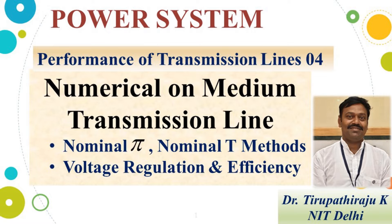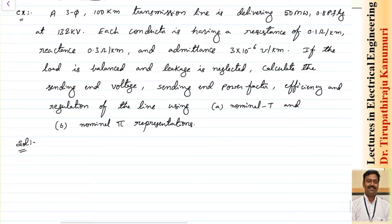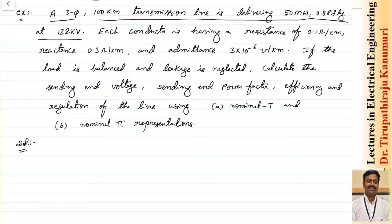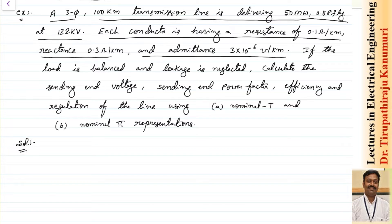Today we are going to discuss a numerical on medium transmission line. A three-phase 100-kilometer transmission line is delivering 50 megawatt at 0.8 power factor lagging at 132 kV. Each conductor has a resistance of 0.1 ohms per kilometer, reactance of 0.3 ohms per kilometer, and admittance of 3×10⁻⁶ mhos per kilometer. Calculate the sending end voltage, power factor, efficiency, and regulation using the nominal T method and nominal Pi method.